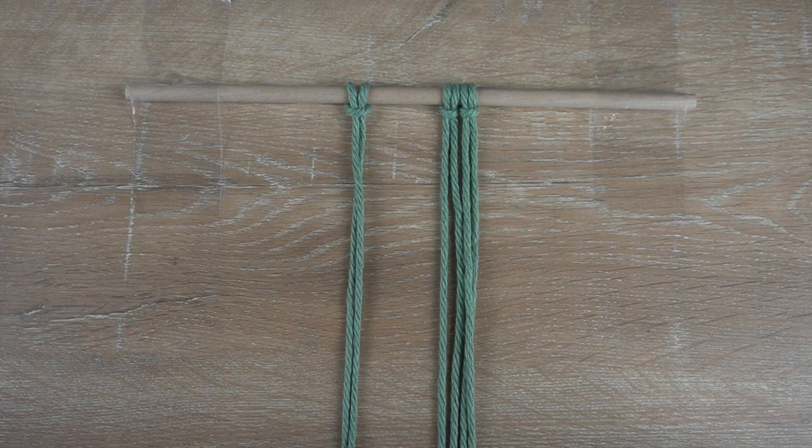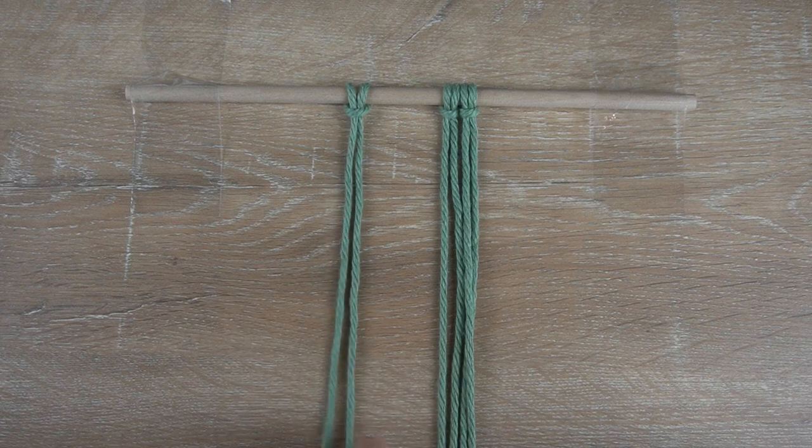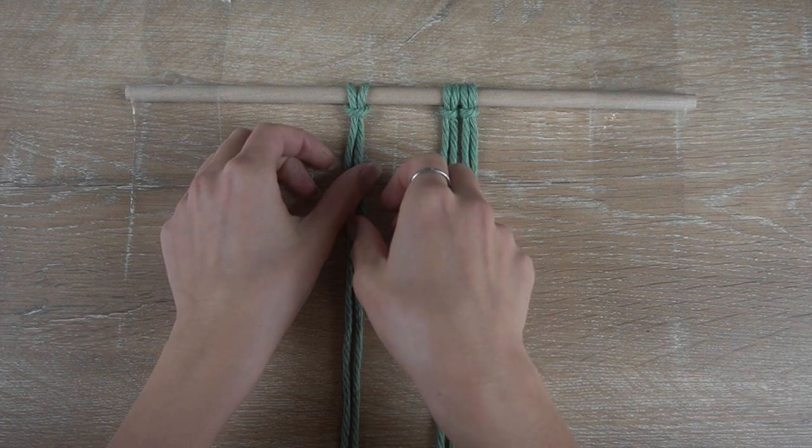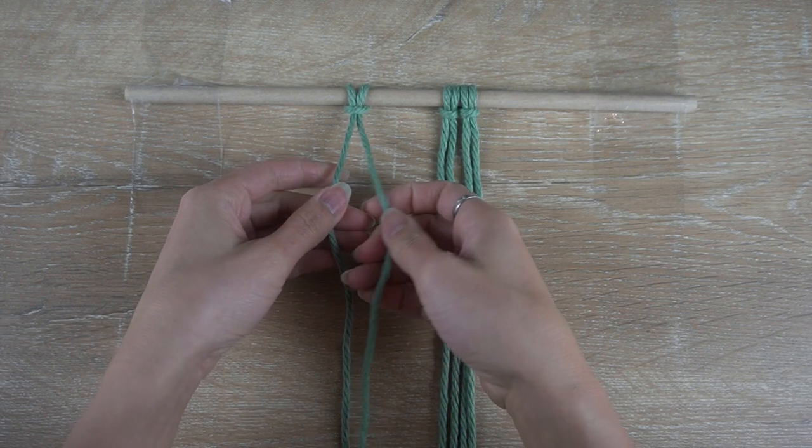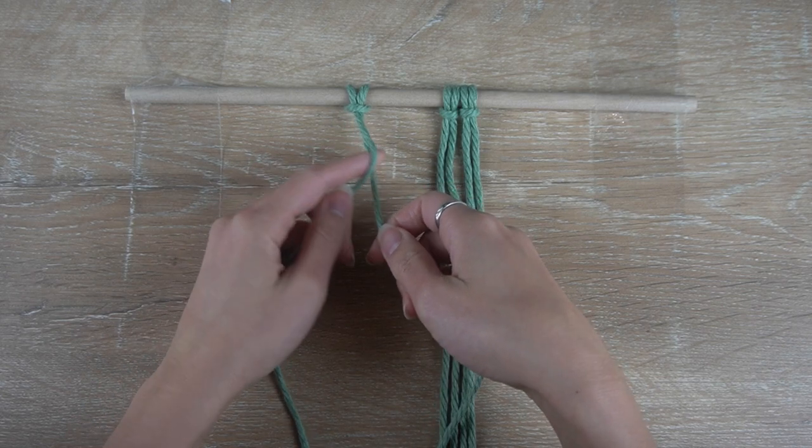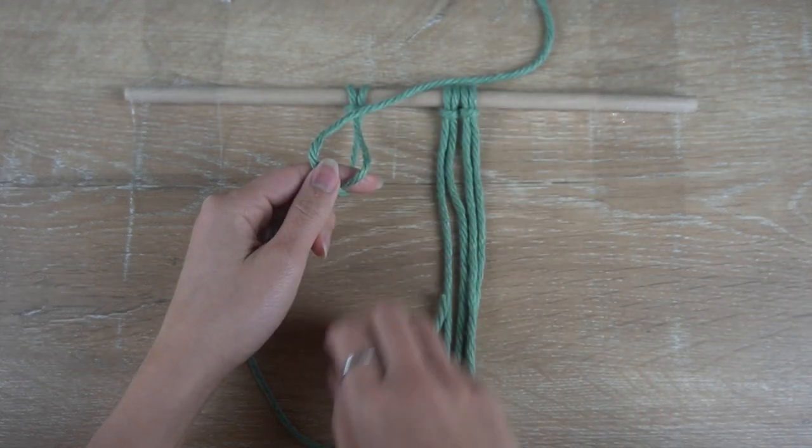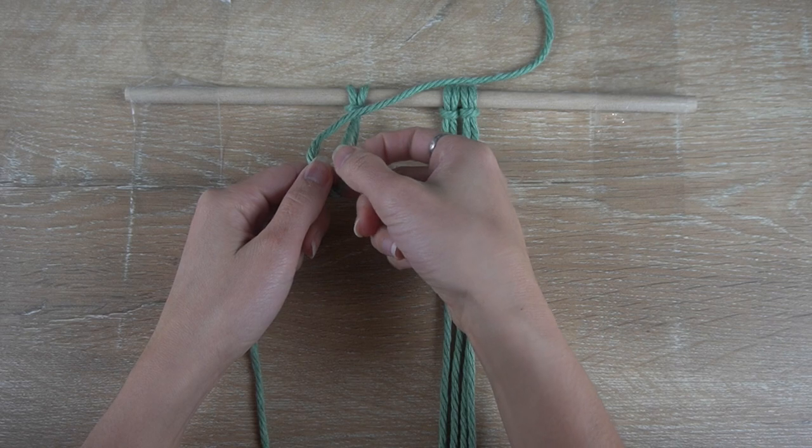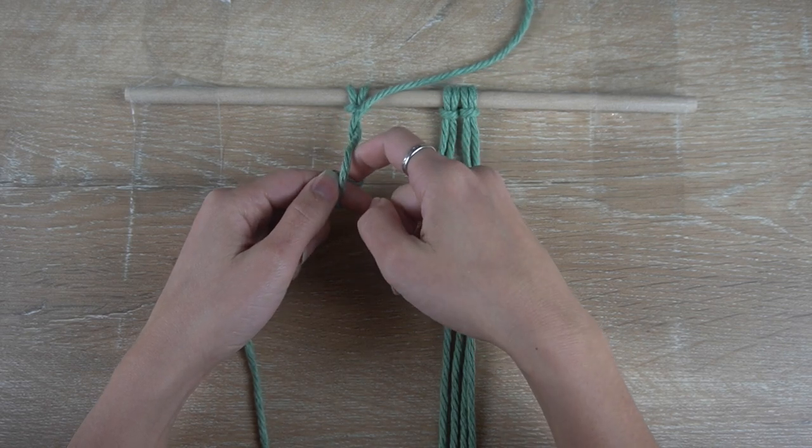So to begin, I will show you two ways to make the alternating half hitch chain. All you need are two strands of cord to make the first one. We will alternate the left cord and the right cord as working cords.